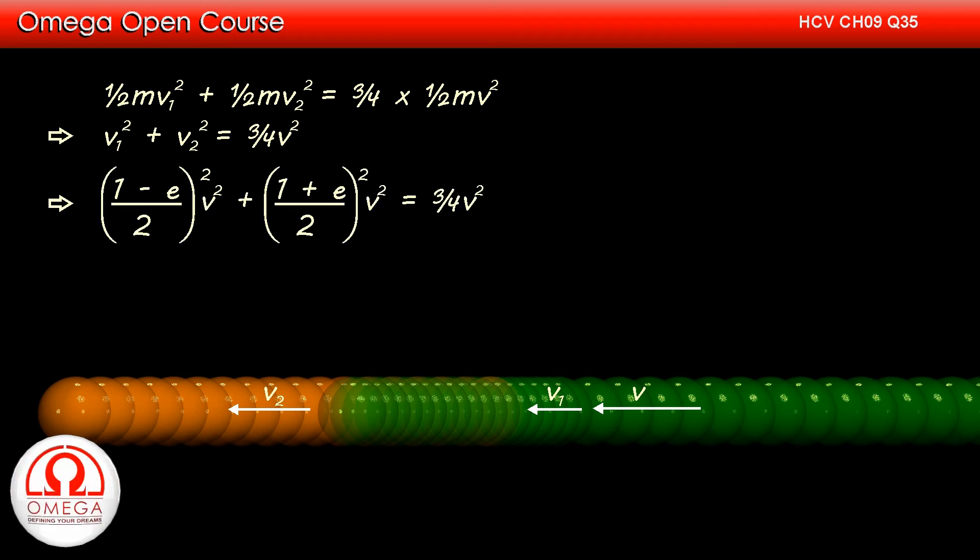Putting the value of V1 and V2, we get 1 minus E by 2 square into V square plus 1 plus E by 2 square into V square is equal to 3 by 4V square.